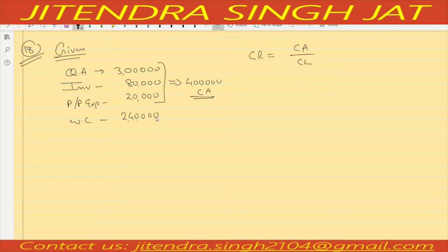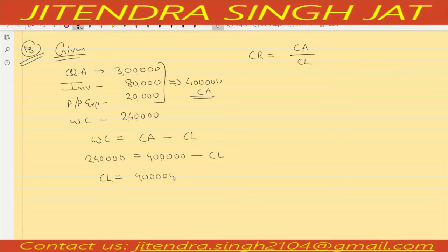Now we need to calculate current liability. Working capital is given, and the formula of working capital is current assets minus current liability. Putting the values: 2 lakh 40,000 equals current asset 4 lakh minus current liability. So current liability becomes 4 lakh minus 2 lakh 40,000, which gives us 1 lakh 60,000.